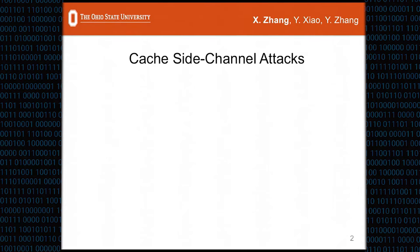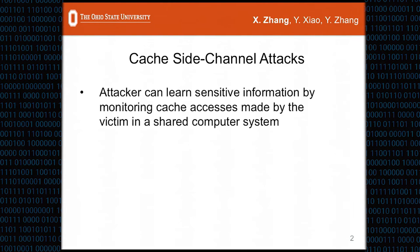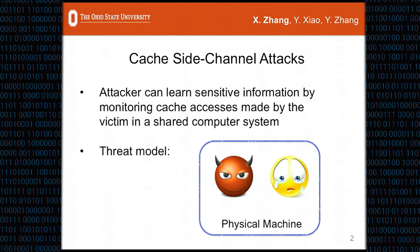Cache side-channel attacks are a class of side-channel attacks in which the attacker can learn sensitive information by monitoring cache accesses made by a victim in a shared computer system. There are many different kinds of cache side-channel attacks. We focus on the threat model in which the attacker and the victim are running on the same physical machine.